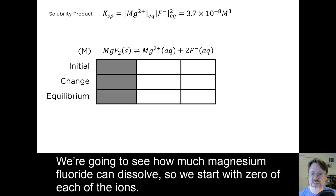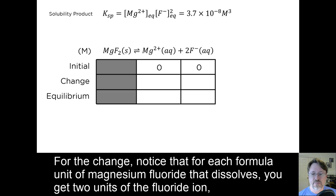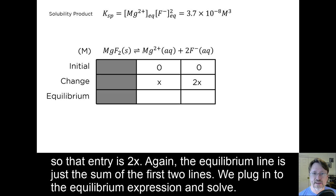We're going to see how much magnesium fluoride can dissolve, so we start with zero of each of the ions. For the change, notice that for each formula unit of magnesium fluoride that dissolves, you get two units of the fluoride ion, so that entry is 2x. Again, the equilibrium line is just the sum of the first two.